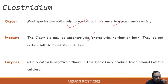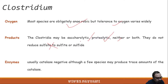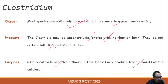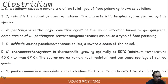Clostridium species are sacrolytic, proteolytic, or both. They do not reduce sulfate to sulfide or sulfite, and they are usually catalase-negative, although a few species may produce trace amounts of catalase.